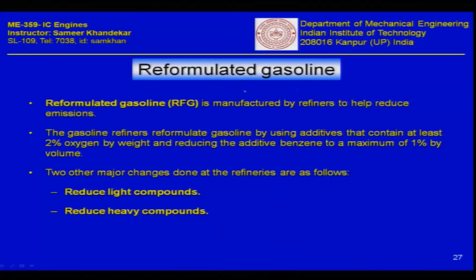One concept now quite prevalent is called reformulated gasoline. Reformulated gasoline, or RFG, is manufactured by refiners to help reduce emissions. Refiners reformulate gasoline by using additives that contain at least 2 percent oxygen by weight, and by reducing benzene to a maximum of 1 percent by volume. Addition of oxygen helps reduce emissions. Aromatics are good octane rating enhancers, but benzene released into the atmosphere has detrimental effects on the environment and must be limited.